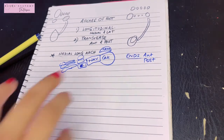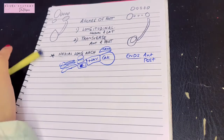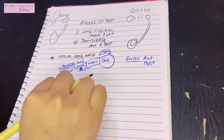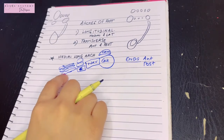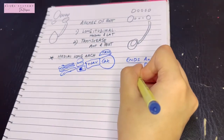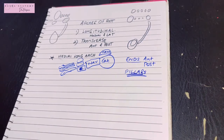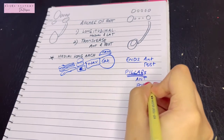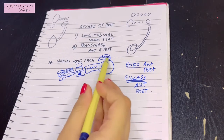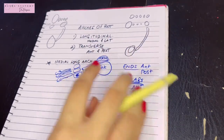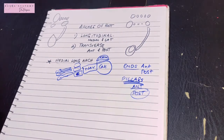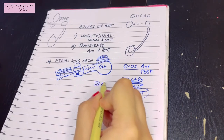Remember to specify the heads of the metatarsals — bases and shafts are not involved in forming the ends. The heads of the first, second, and third metatarsals form the anterior end, and the medial tubercle forms the posterior end. The anterior pillars are the metatarsal bones, cuneiform bones, navicular bone, and tarsal bone, while the posterior pillar is the medial side of the calcaneus bone — a single bone.